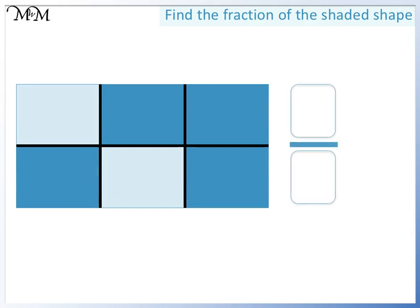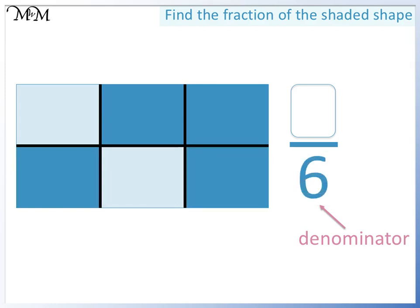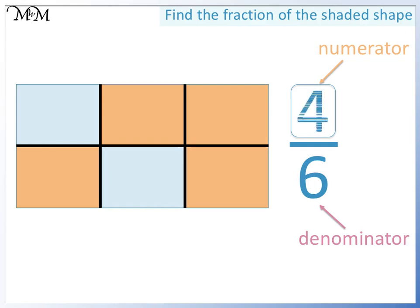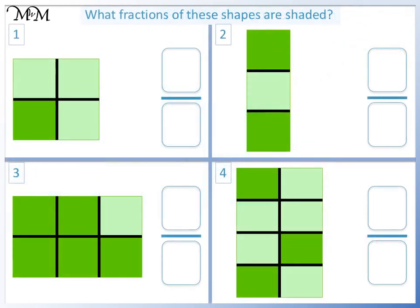We'll start by finding the denominator. To do this, we count the total number of parts: one, two, three, four, five, six. The denominator is six. Next we'll find the numerator — we count the number of shaded parts: one, two, three, four. Four parts out of six have been shaded in. So the fraction is four sixths.